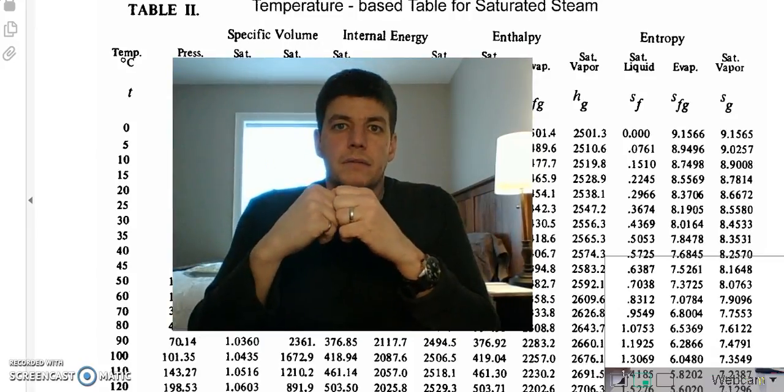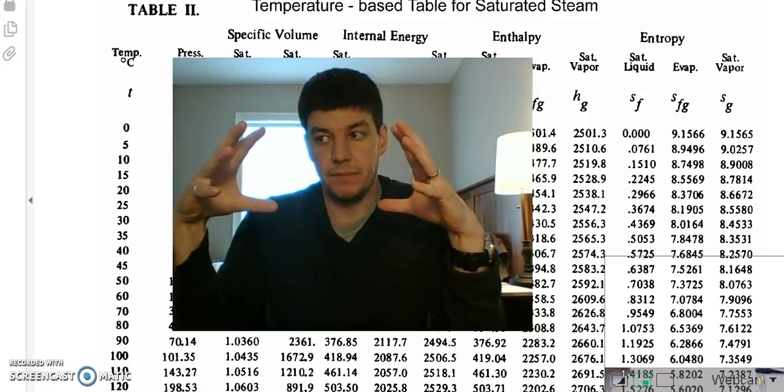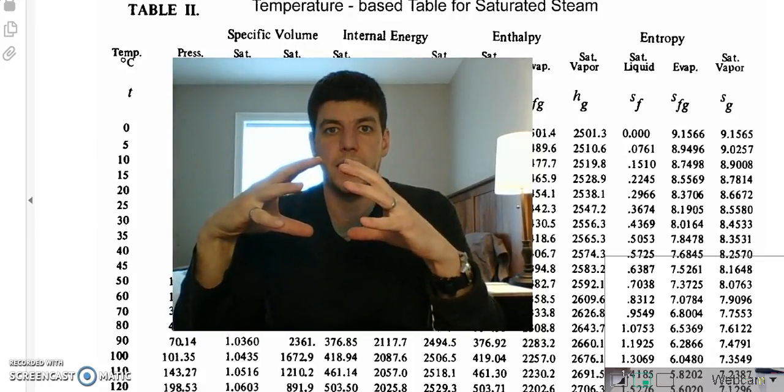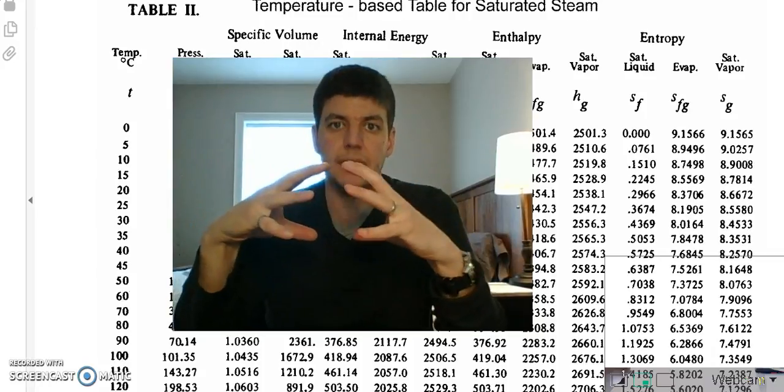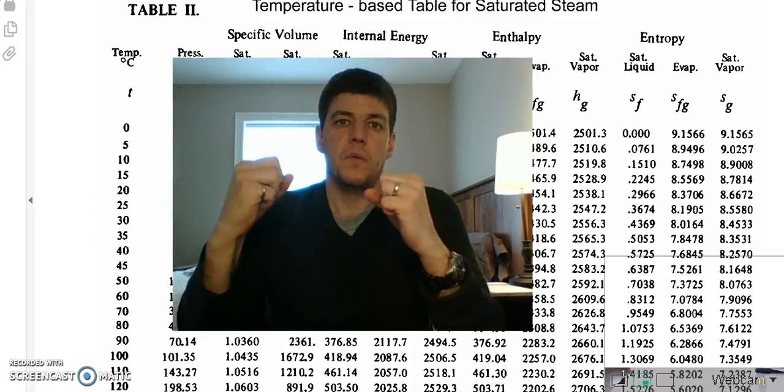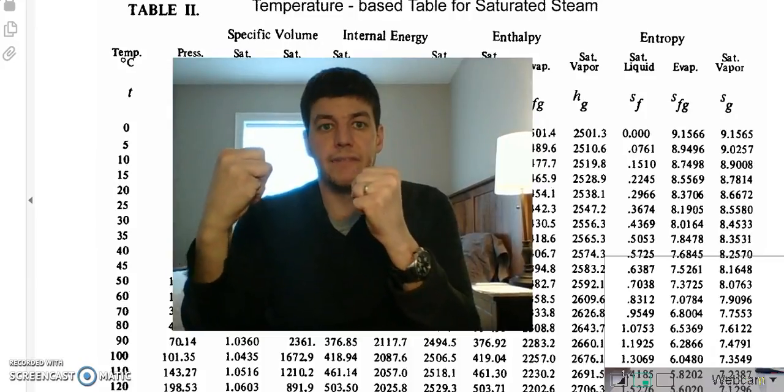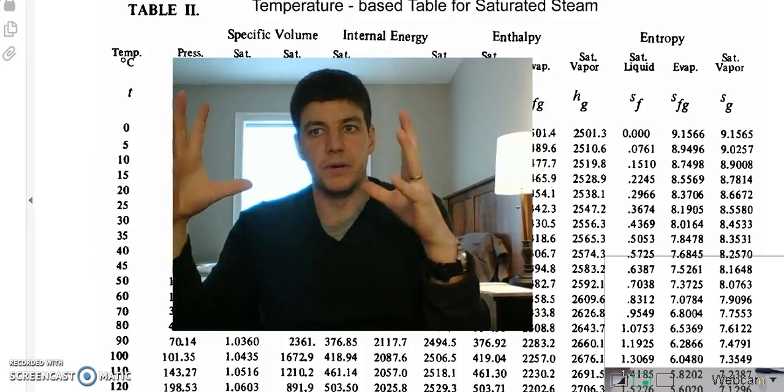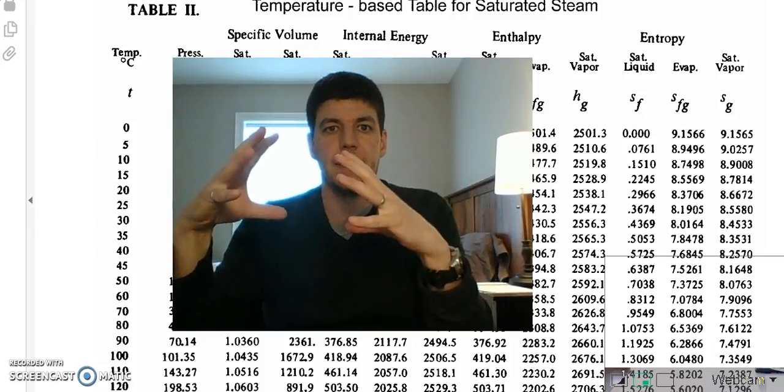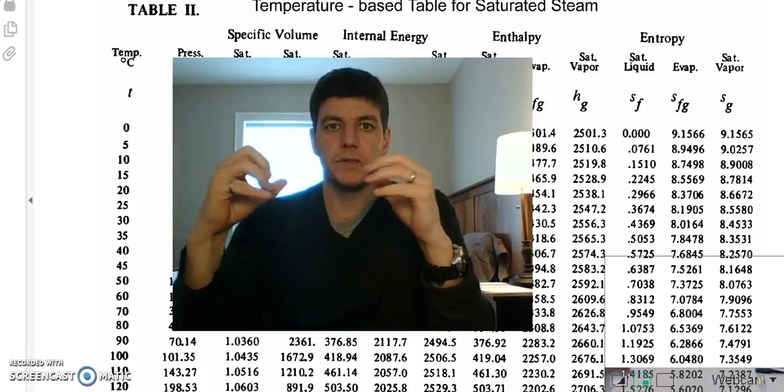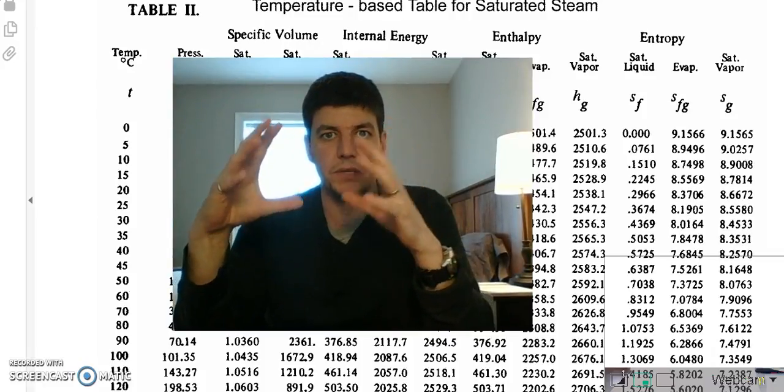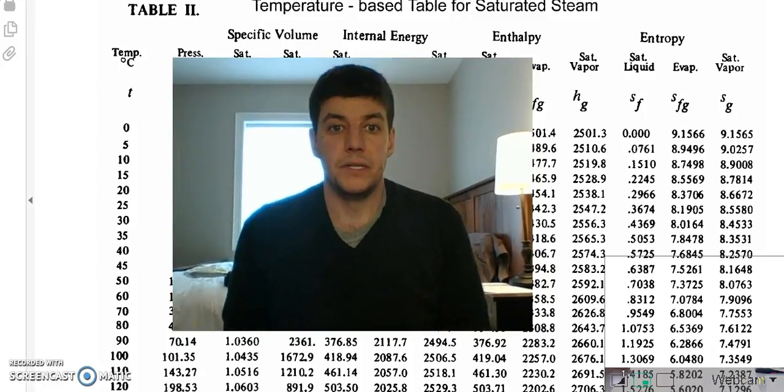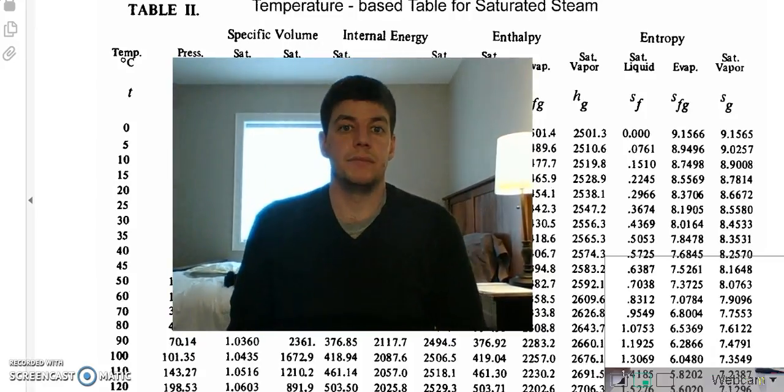But on the other side what I have is pressure. Pressure acts on the molecules and tends to want to keep them together. So the more temperature I have, the more likely it is for steam to be produced from liquid. But the more pressure I have, the less likely it is. I have this battle always raging between temperature and pressure, and that relationship exists inside of our steam tables.